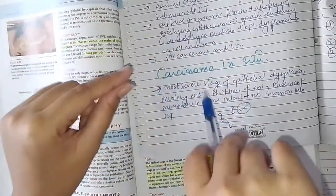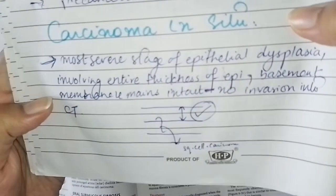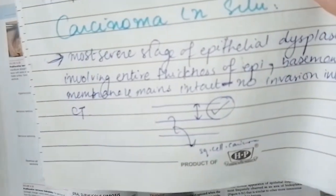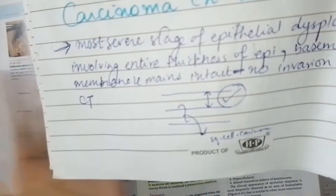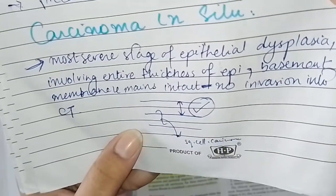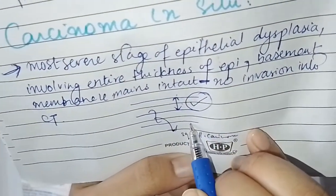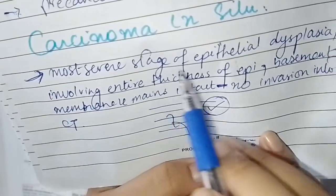Carcinoma in situ is the most severe stage of epithelial dysplasia. It involves the entire thickness of the epithelium, but the basement membrane remains intact and no invasion occurs into the connective tissue. This is the basic definition of carcinoma in situ, and it is also the key difference between carcinoma in situ and squamous cell carcinoma.